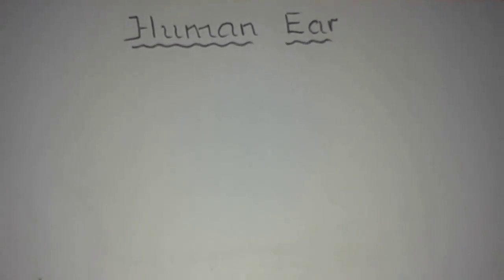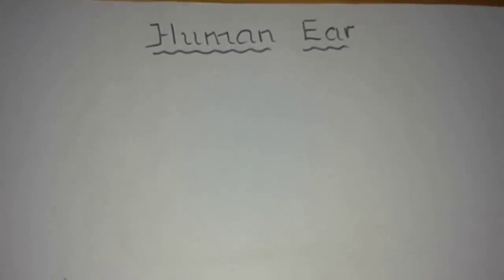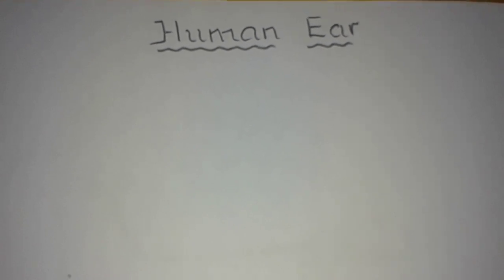Hello children, today we are going to learn how to draw the human ear. The human ear is a sense organ which helps in hearing and maintaining body balance. It consists of three parts: outer ear, middle ear, and inner ear. So let us draw the structure of the human ear.